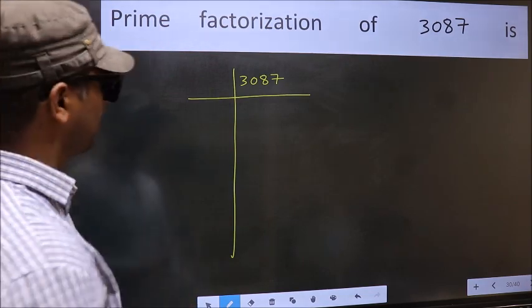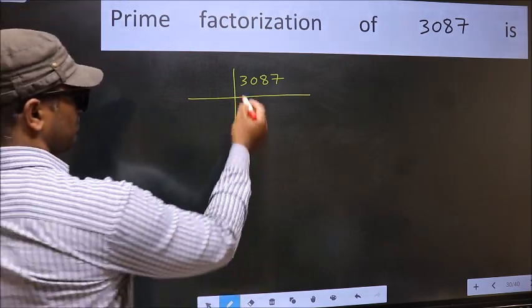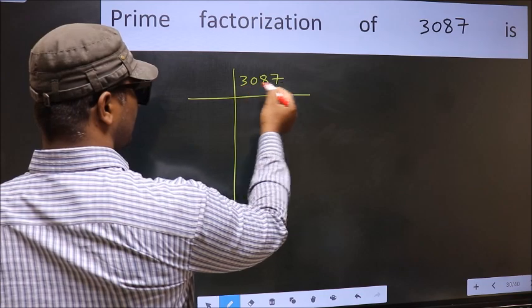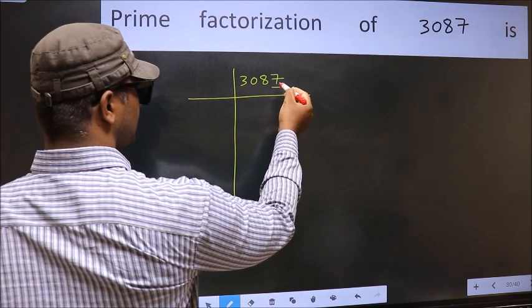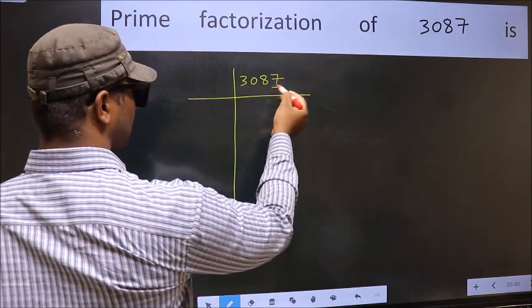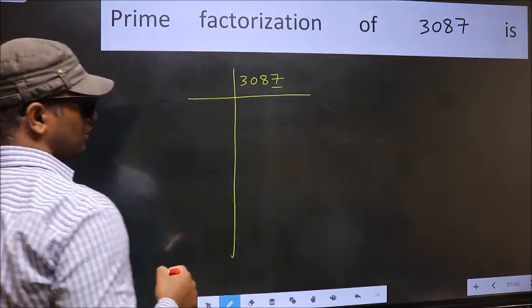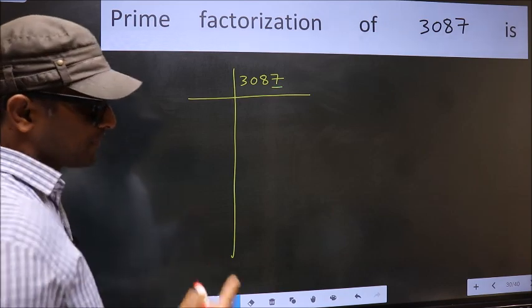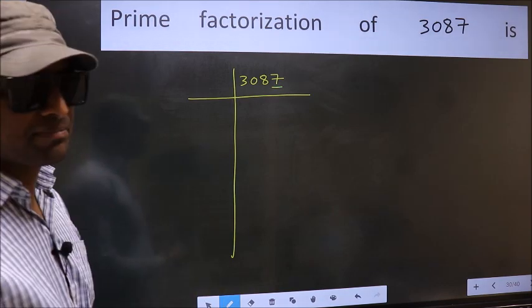Next, in this number, the last digit 7 is not even. So this is not divisible by 2.